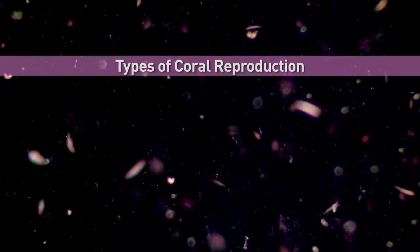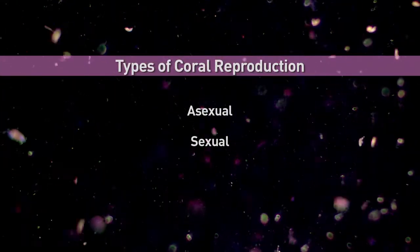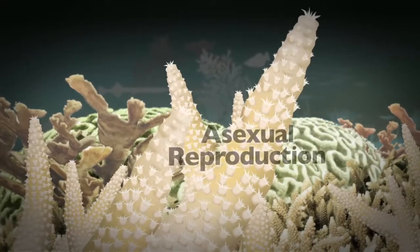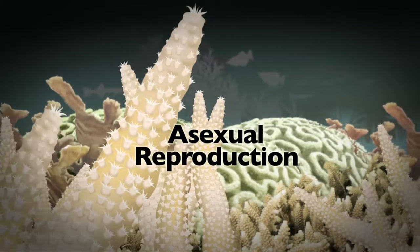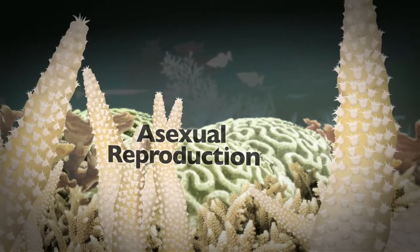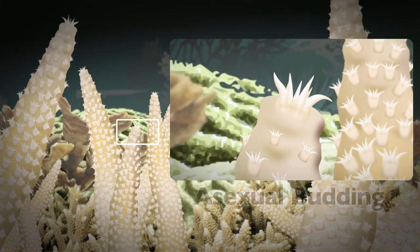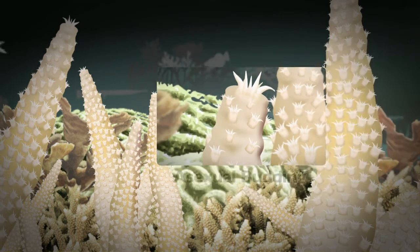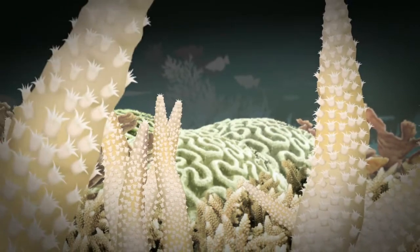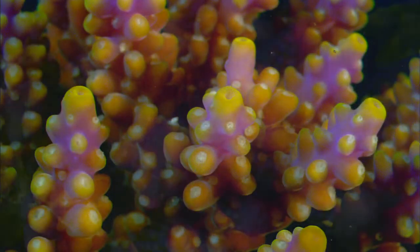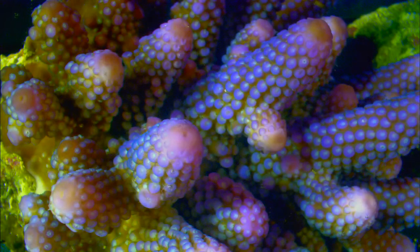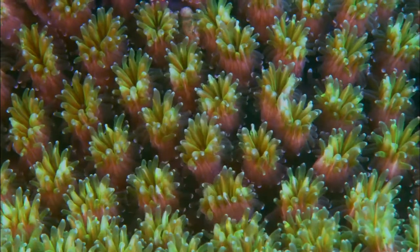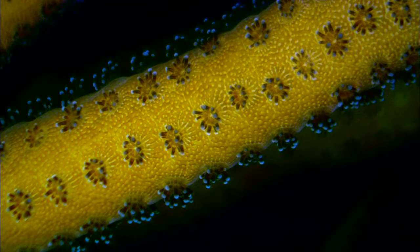Corals have different types of reproduction. Some of the reproductive processes are called asexual reproduction, and some are sexual reproduction processes where eggs and sperm are developed. Asexual reproduction includes clonal budding of the polyps. When you have a coral colony, each of these little polyps over time grows and then divides to form daughter polyps, and over time you get a colony formed from this process of asexual reproduction. This whole colony consists of polyps that are genetically identical.